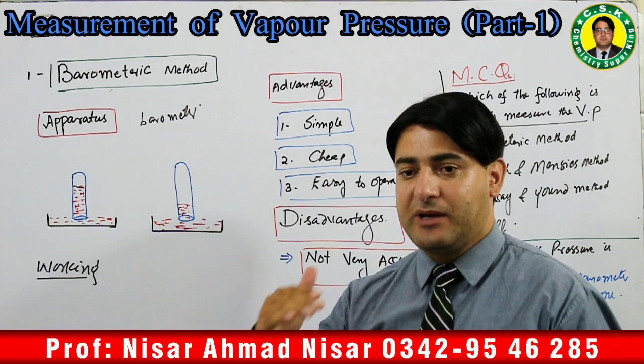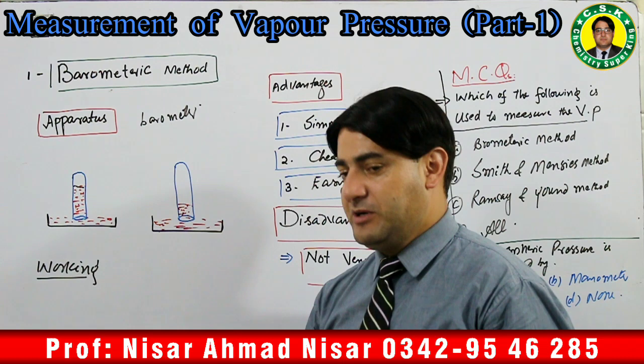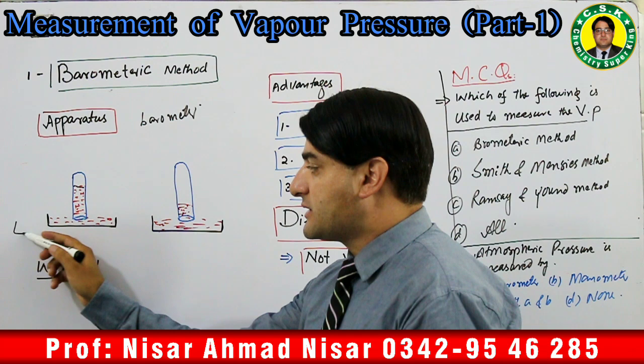Agar hum sea level par experiment conduct kar rahe hon to mercury ka level tube ke andar 760 mm par stack karta hai. To yeh hamare paas simple sa barometer hota hai.